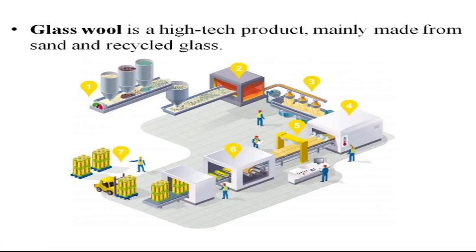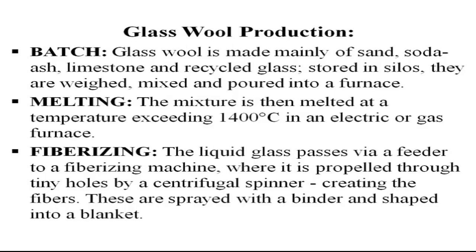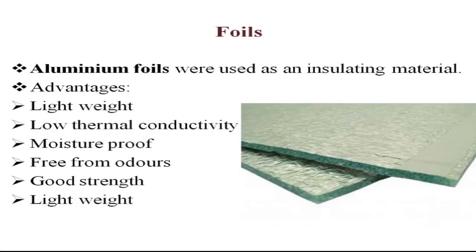Glass wool is similar to rock wool but uses sand and recycled glass, melted and spun into fibers, then binding materials are added, compressed, cured, ovened, and cut with facing material.